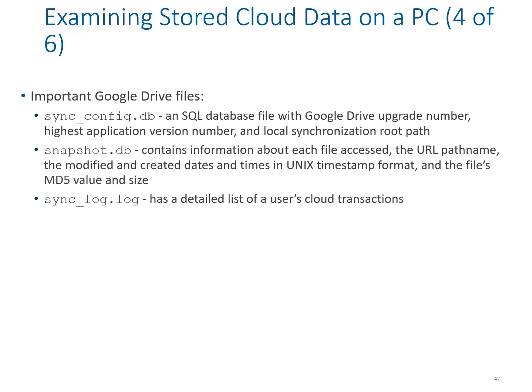The important Google Drive files to look for include: sync_config.db, which is an SQL database file that records the highest application version number and the locally synchronized root path. There is also snapshot.db, which contains information about each file — access URL, path, timestamp, date modified, Unix timestamp format, MD5 value, and file size — so we can see what data was compromised, at what time, and between which computers. Finally, sync.log contains a detailed list of user cloud transactions.